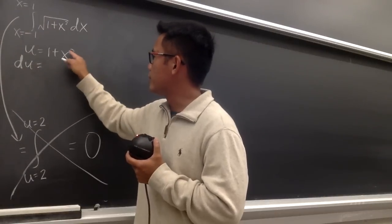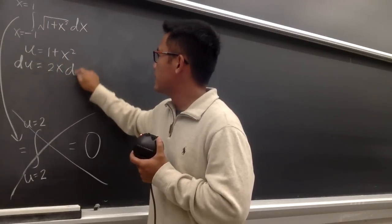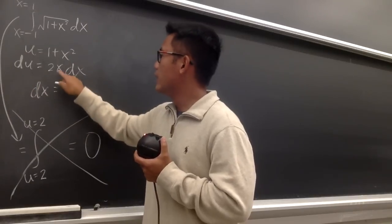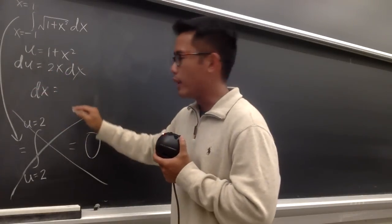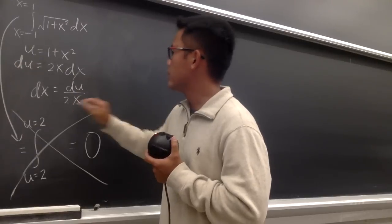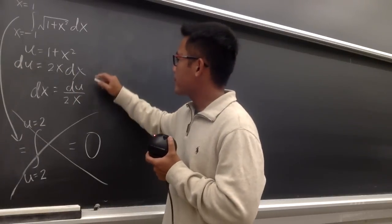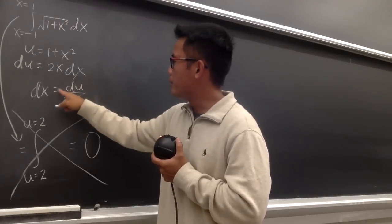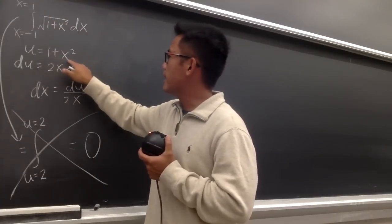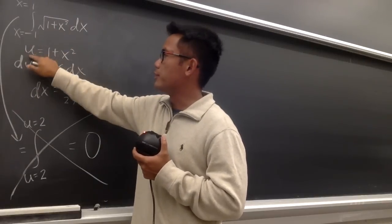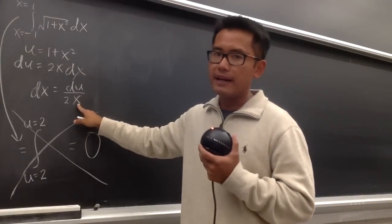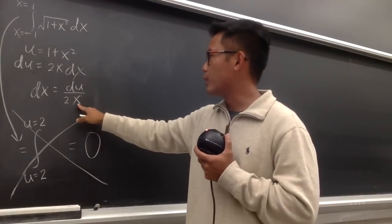Differentiate u = 1 + x², we get du equal to 2x dx, and then I'm going to isolate the dx, so dx is equal to du over 2x. Now I'm going to plug this in for dx, and 1 plus x squared is going to be replaced by u. But this x is not invited in the u world, and this is how we're going to fix it.